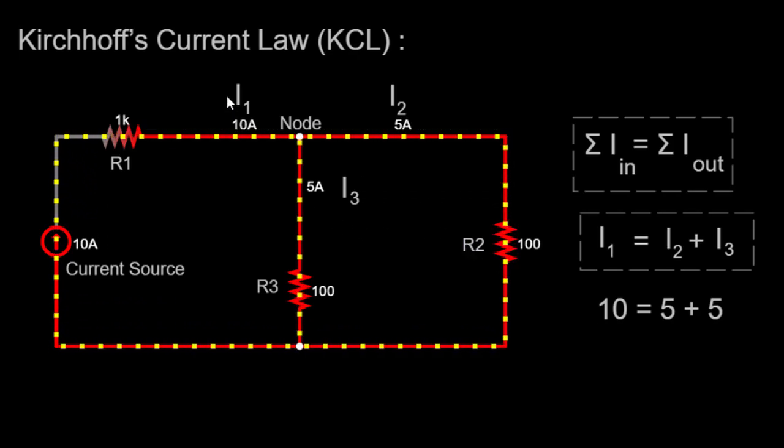For simplicity, let's denote the currents through R1, R2 and R3 as I1, I2 and I3, respectively.